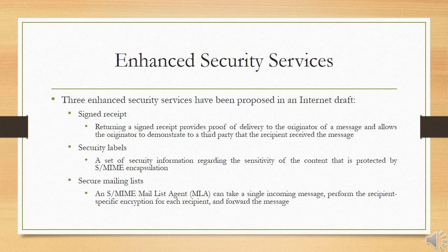A security label may be included in the authenticated attributes of a signed data object. A security label is a set of security information regarding the sensitivity of the content protected by S/MIME encapsulation. Labels may be used for access control, indicating which users are permitted access to an object. Uses include priority levels — such as secret, confidential, restricted — or role-based labels describing which kinds of people can see the information, for example patients, health care team, and medical billing agents.